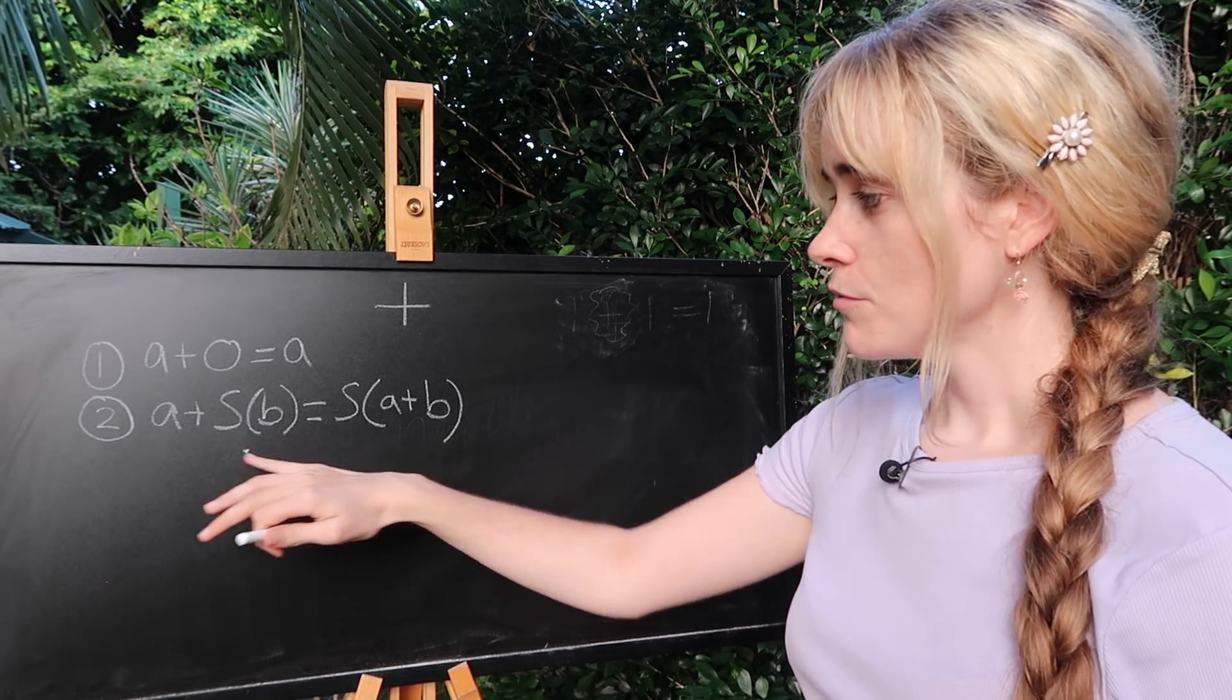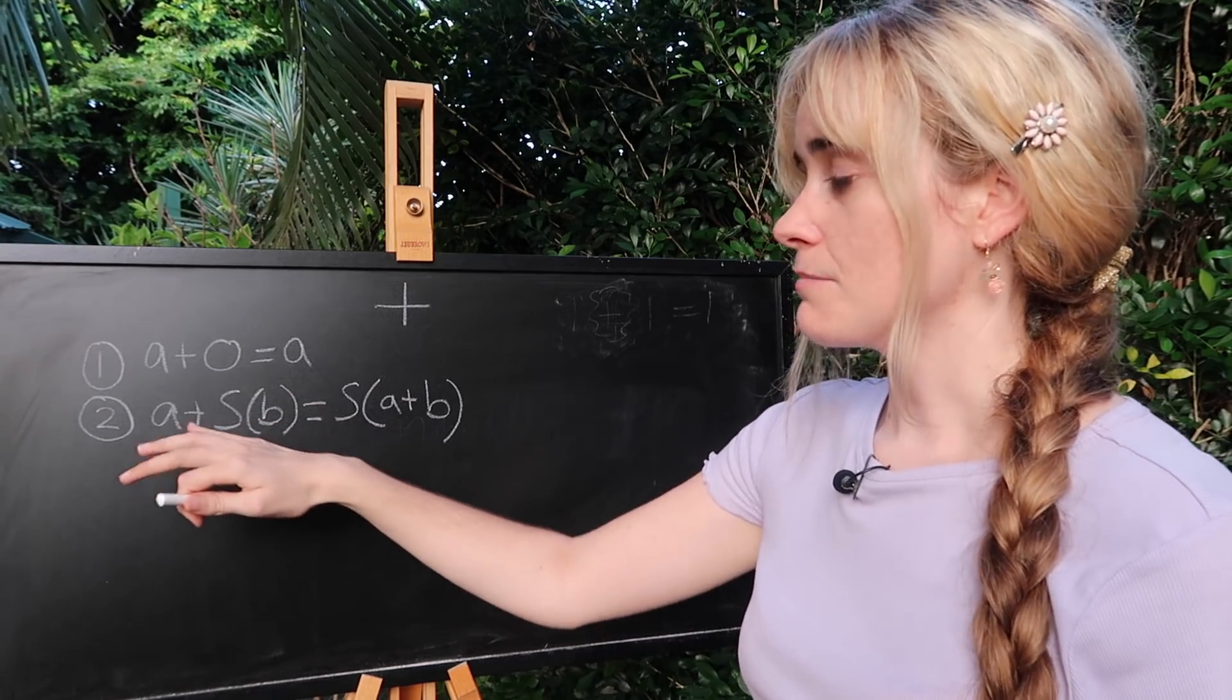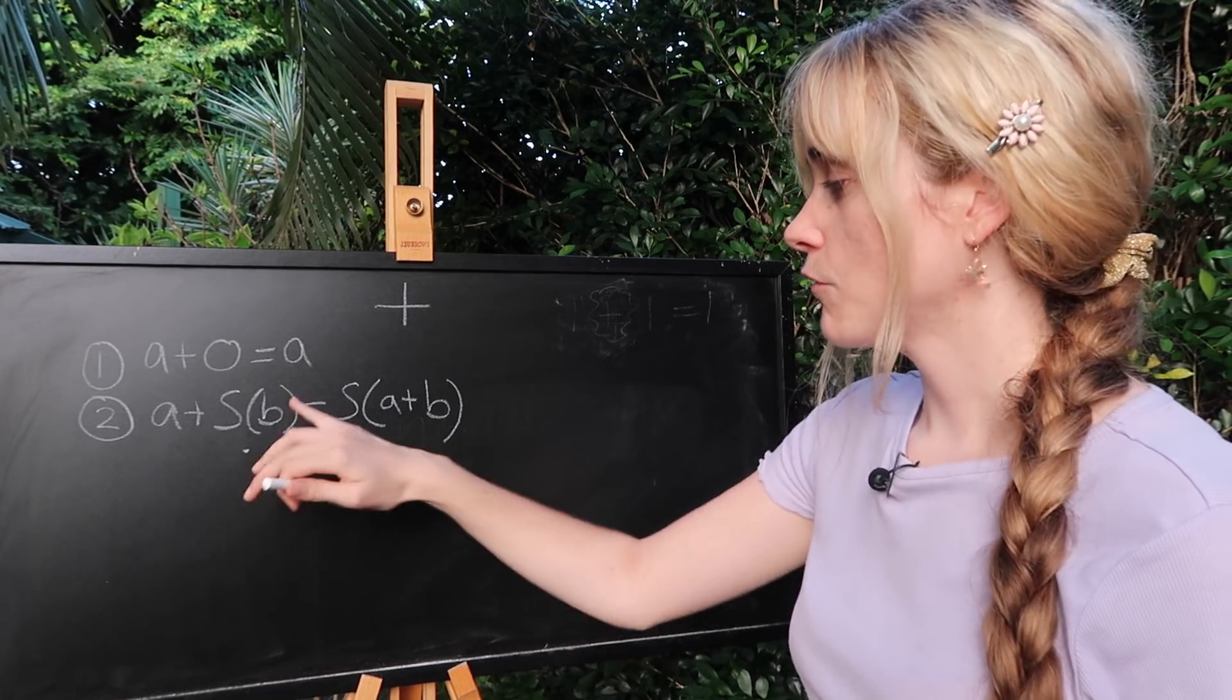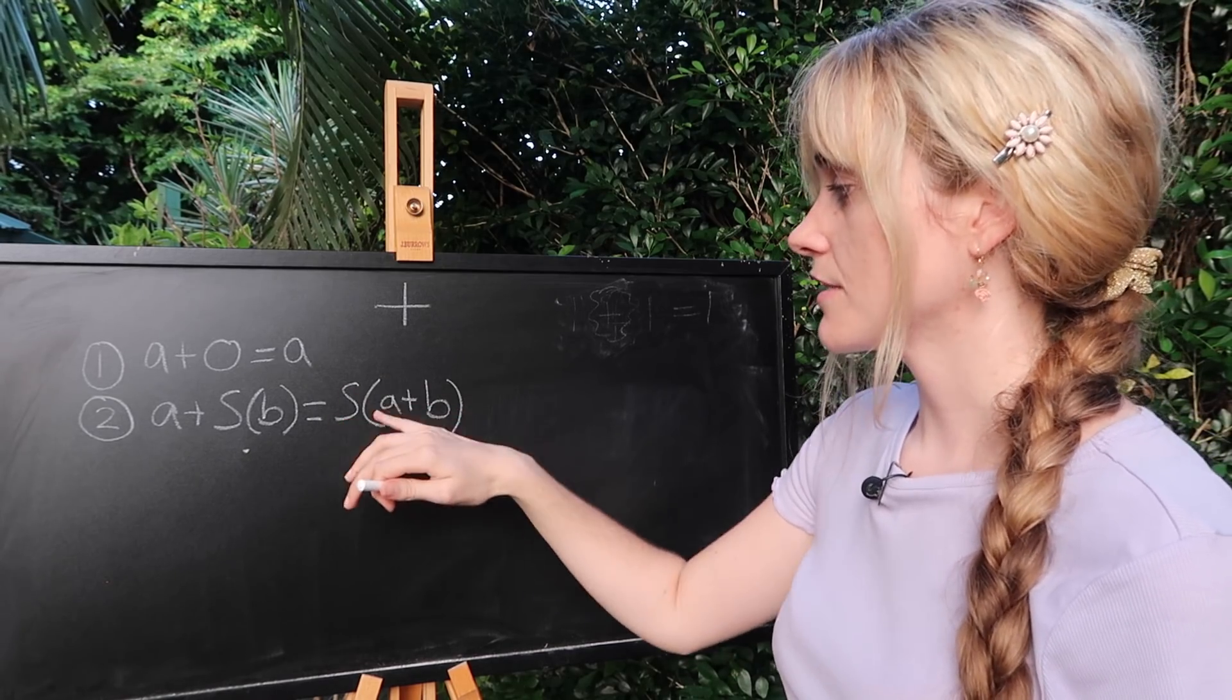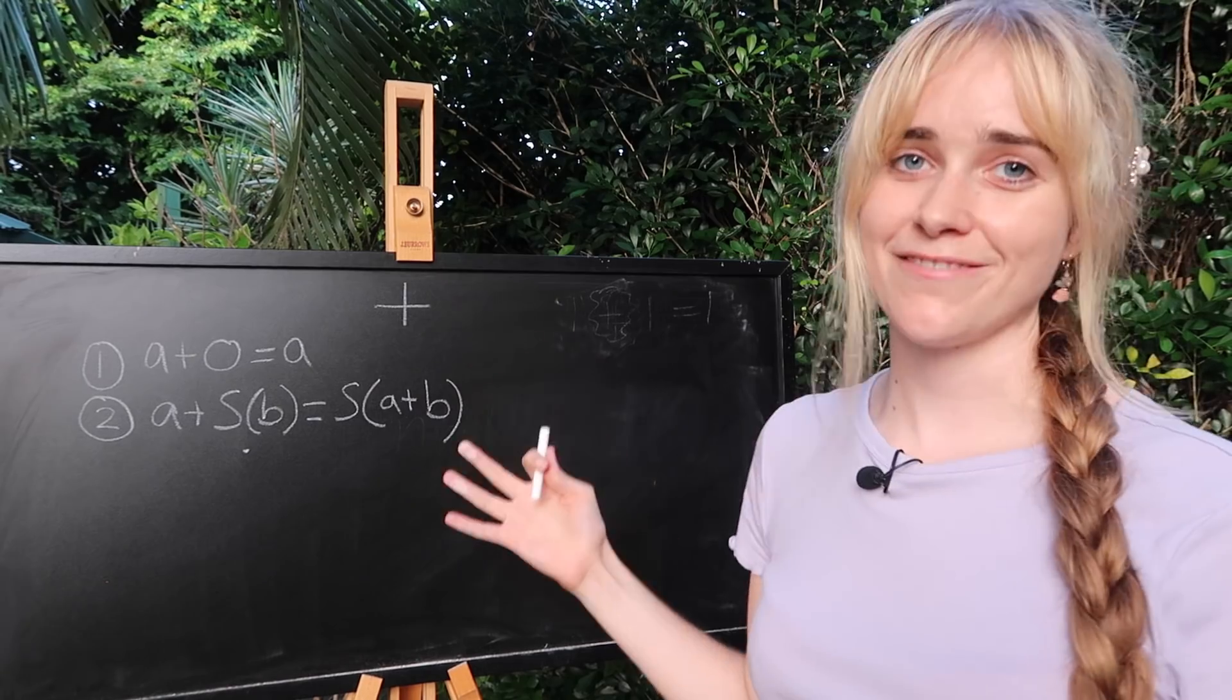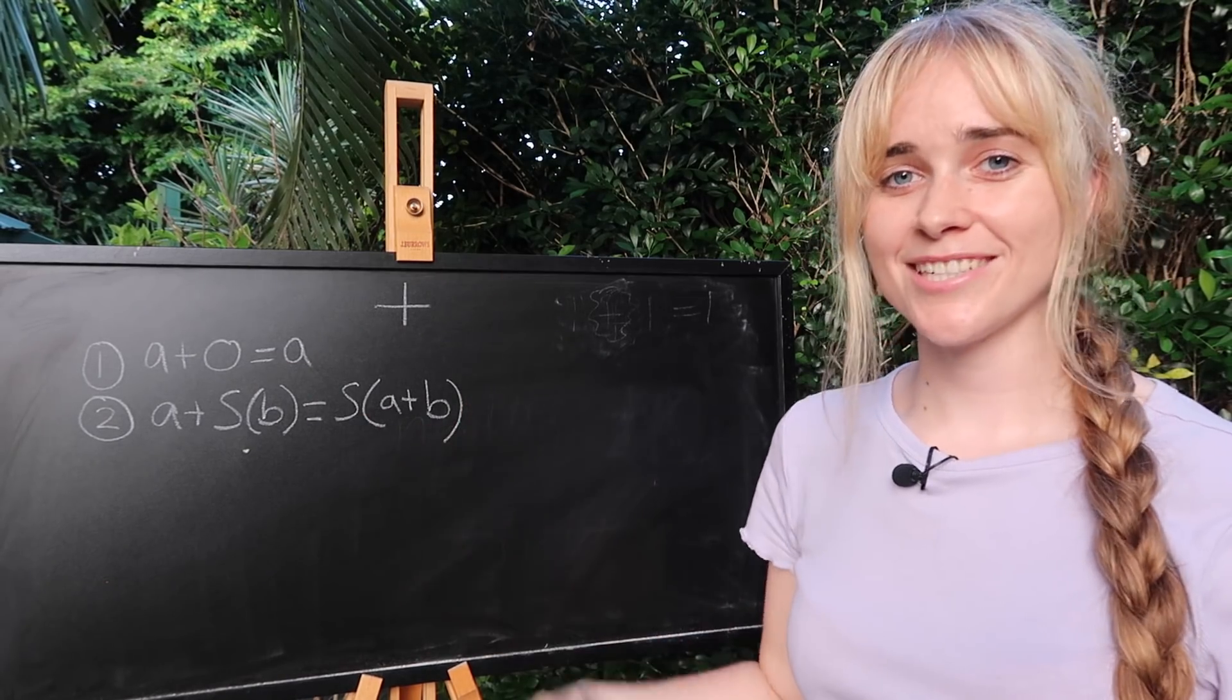Say if b was two you'd have the successor of b being three plus maybe a is one. So that would give you four. And then you'd have the same thing here one plus two. The successor of one plus two would be four as well. So hope that these two rules of addition make sense to you.